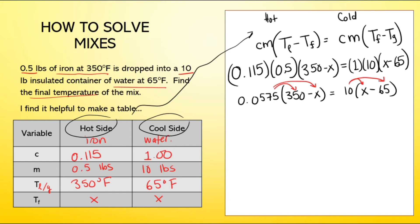The multiplication, 0.0575 times 350 is 20.125. And 0.0575 times negative X, you can't really do much there, just write them both down, keep that negative. On the right side, 10 times X is just 10X. And then 10 times negative 65 is negative 650.